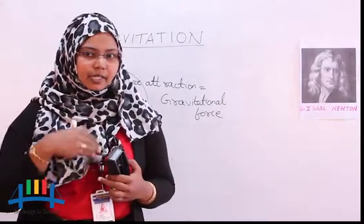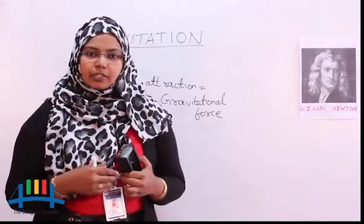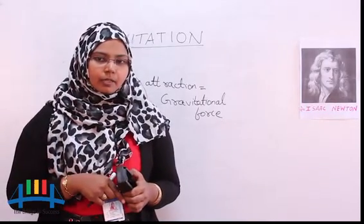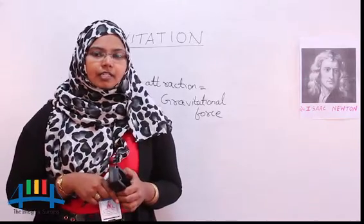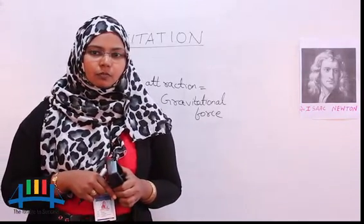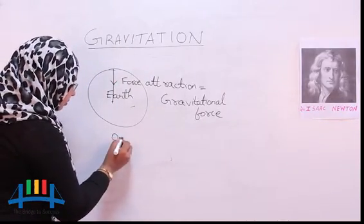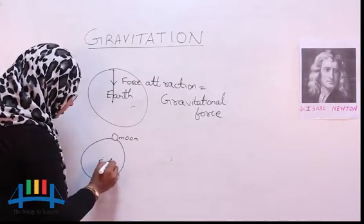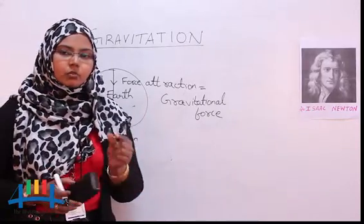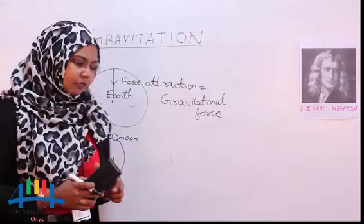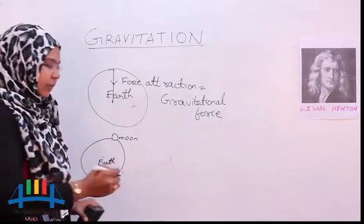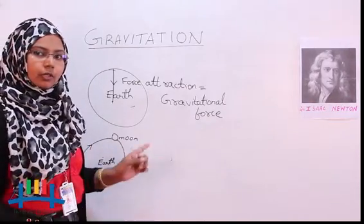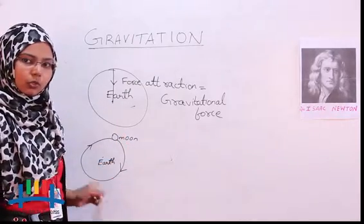Now, you have learned in your previous classes about straight line motions, curved motions, and many other types of motions. But in this chapter let us discuss another type of motion. Let us take the motion of the moon around the earth. Moon is a massive body but it is very small compared to the size of the earth. What is making the moon move continuously around the earth? What are the factors making the moon go around the earth?